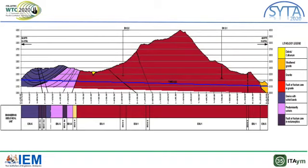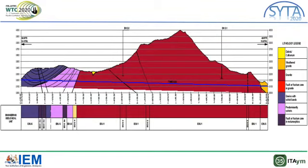This shows the distribution of lithologies along the alignment. The south portal starts with weathered gneiss followed by massive gneiss. Going along the alignment, we then have the contact boundaries of schist and gneiss, then schist and gneiss bands, followed by massive gneisses near the north portal. From this figure, you can make out that the main geological unit is gneiss, with some sections of localized weak zones including contact zones and fault zones along the alignment.